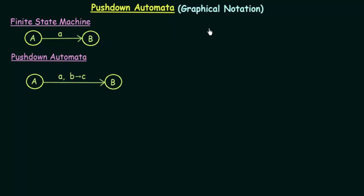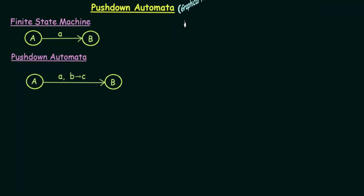In the last lecture, we studied the formal definition of pushdown automata and saw how it can be formally defined using those seven tuples. In this lecture, we will be seeing how we can graphically denote pushdown automata — studying the graphical notation of pushdown automata.